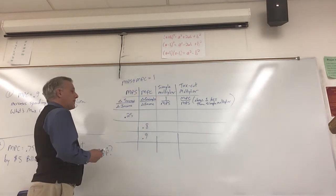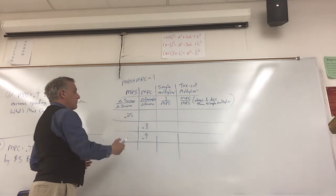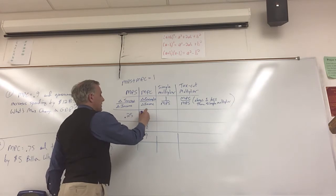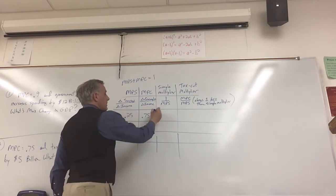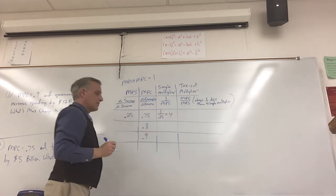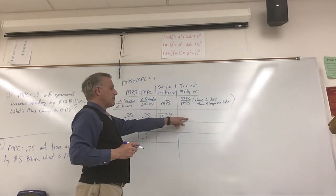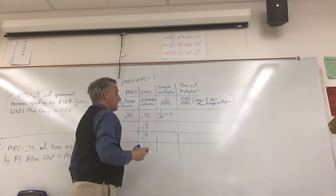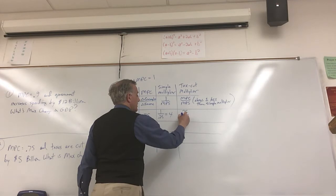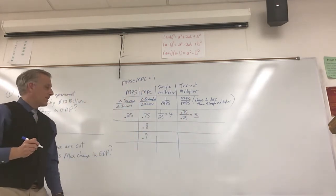All right, all I am given is one of these two things, MPS or MPC, and I can figure out the rest. So if MPS is 0.25, this is 0.75. The simple multiplier would be 1 over 0.25, which is 4. Seeing into the future as I can, I am going to predict that this multiplier is 3. The tax cut multiplier over here is 3. Let's see if I'm right. 0.75 divided by 0.25 in your calculator or in your heart, that does equal 3.